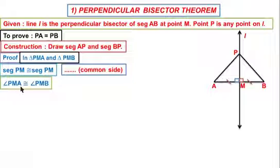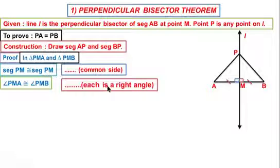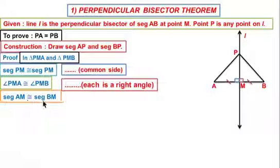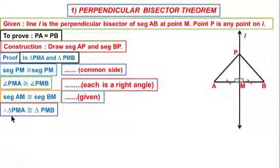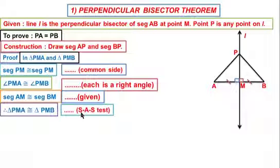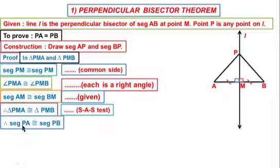Angle PMA is congruent to angle PMB — each is a right angle. Segment AM is congruent to segment BM — this is given. Therefore triangle PMA is congruent to triangle PMB by the Side-Angle-Side (SAS) test.